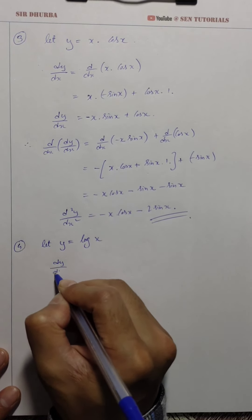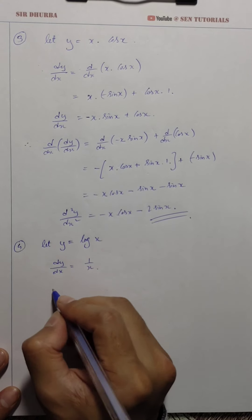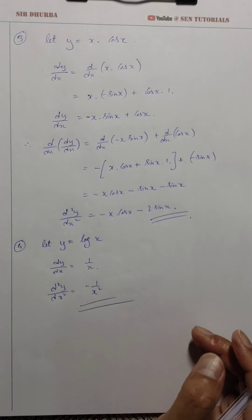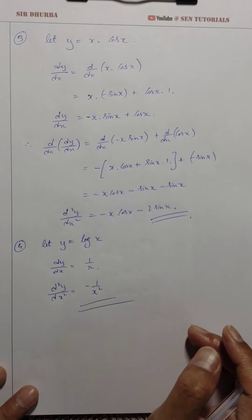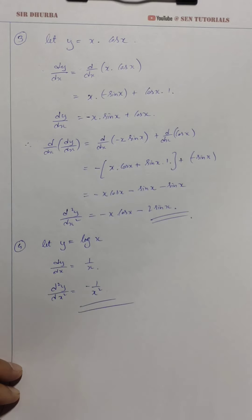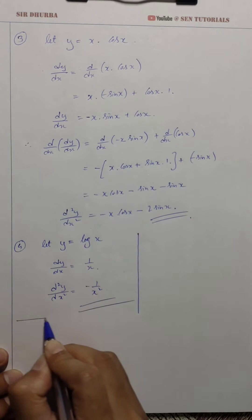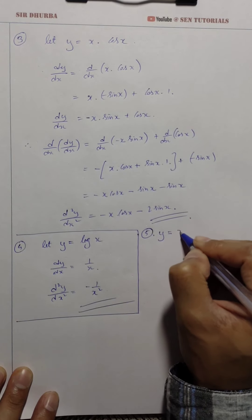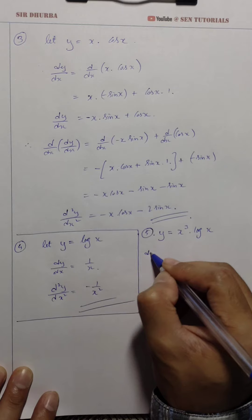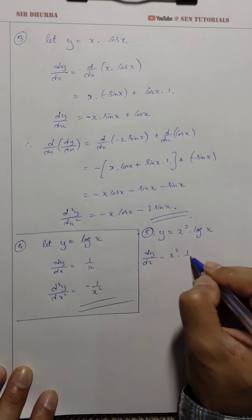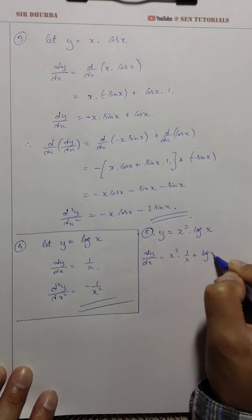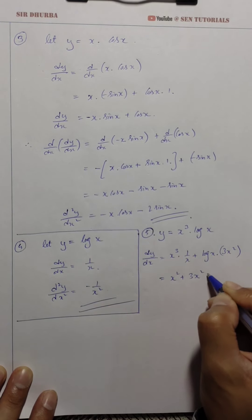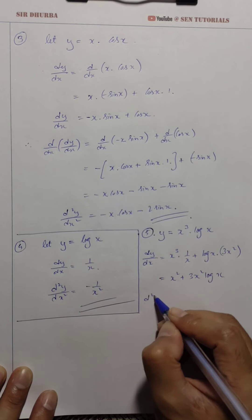Question 4: let y = log(x). Differentiating: dy/dx = 1/x. The second-order derivative is the derivative of 1/x, which gives d²y/dx² = −1/x². Question 5: let y = x³·log(x). Applying the product rule for dy/dx: x³·(1/x) + log(x)·3x² = x² + 3x²·log(x).